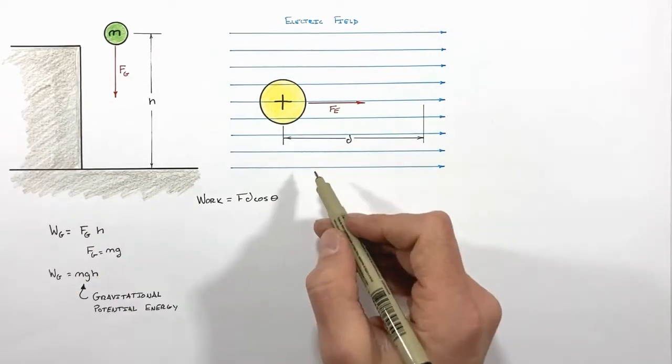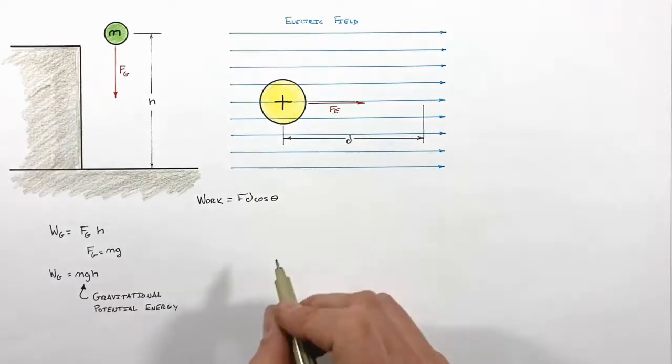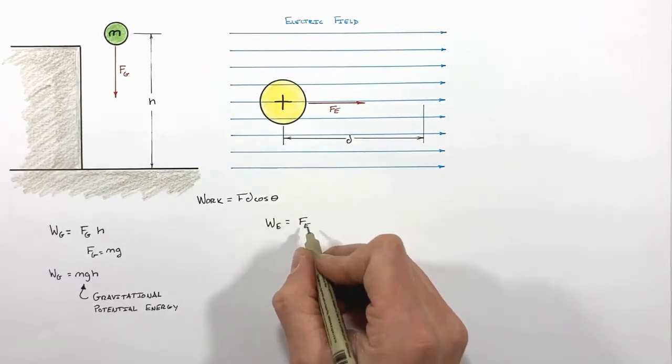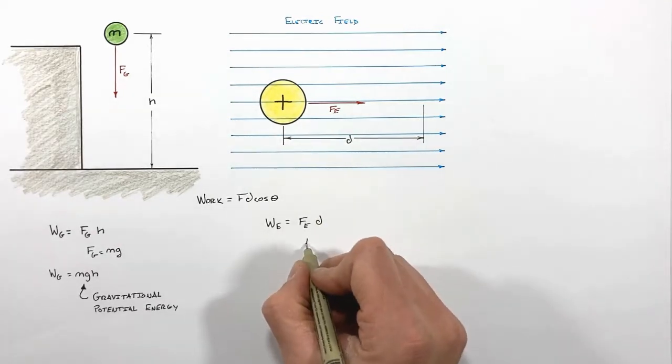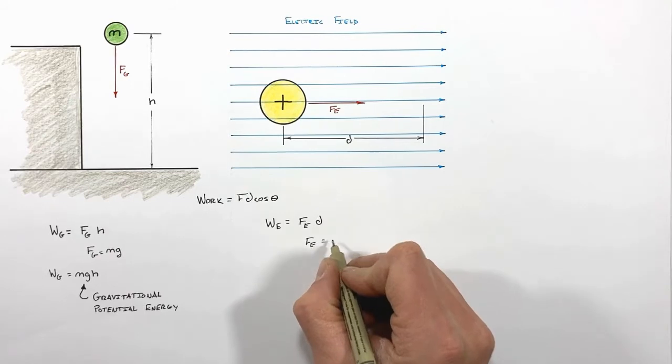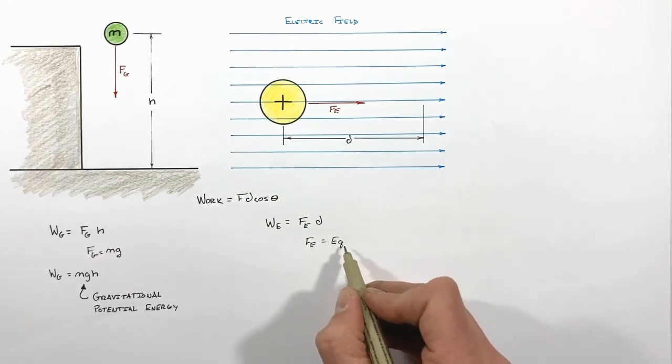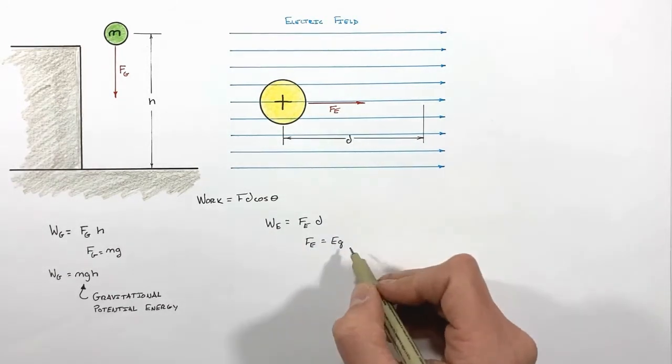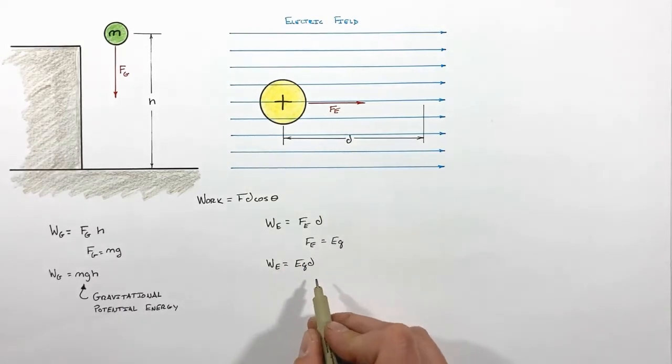Now, in the case of this charge, the work done on the charge by the electric force is given by the electric force multiplied by the displacement. And you remember, the electric force for a charge is simply the magnitude of the electric field multiplied by the quantity of charge, which we've placed in that field. So combining these two, we get this term, which is what we refer to as the electric potential energy.